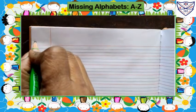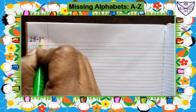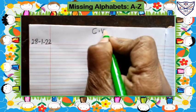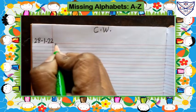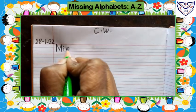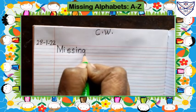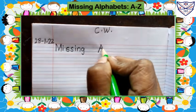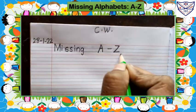Right here, today's date first — that is 2A28-1-2222. Right here, C.W. classwork. In the next line, write heading: Missing — M-I-S-S-I-N-G. Missing, leave one finger space. Capital A-Z. Missing A-Z.